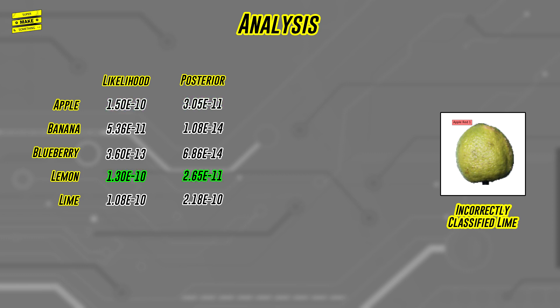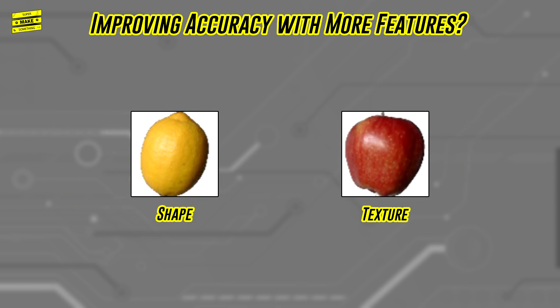Interestingly, the classifier's second choice was a lemon, this time because of the image's average green value and its size. One way to potentially address this is to add other features that both better describe the overall shape of the fruit, since lemons tend to be the most elliptical looking fruit among these classes, and the fruit's texture, since the skin of an apple is relatively smooth compared to the other two. However, adding these features may negatively affect the classification accuracy of other fruits, so new features should always be tested carefully before they're deployed in the real world.